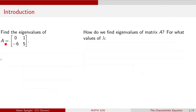Let's say we have a two by two matrix A whose first column is zero, negative six, and the second column is one, five. We would like to find the eigenvalues of this matrix, which we typically denote with the Greek letter lambda.